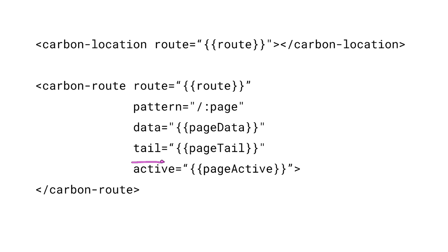Anything after the pattern that we have not matched gets exposed to our application as the tail, and I'm going to expose that using a binding called page tail. The idea of a tail is interesting — it allows us to break up our URL into different subsections that our app cares about. I can bind the tail and pass that into a child component, and that child component doesn't have to know anything else about the URL or the entire application — it only cares about that one piece of the URL it is scoped to.